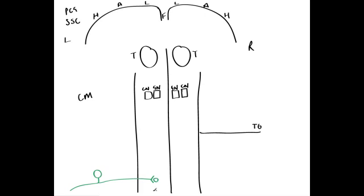Here we can draw the synapse of this primary neuron with a secondary neuron, and here's the cell body of the secondary neuron. Remember that for both the spinothalamic and the dorsal column pathway, it takes three neurons to get from the sensory receptor to the somatosensory cortex. This is our primary neuron of the spinothalamic tract — STT. The primary neuron passes into the spinal cord and forms a synapse with a secondary neuron in the dorsal grey horn.